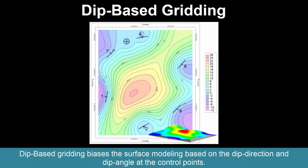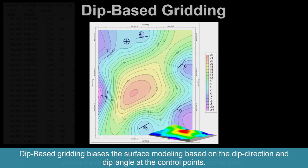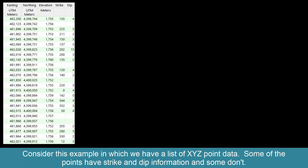Dip-based gridding biases the surface modeling based on the dip direction and dip angle at the control points. Consider this example in which we have a list of XYZ point data. Some of the points have strike and dip information and some don't.